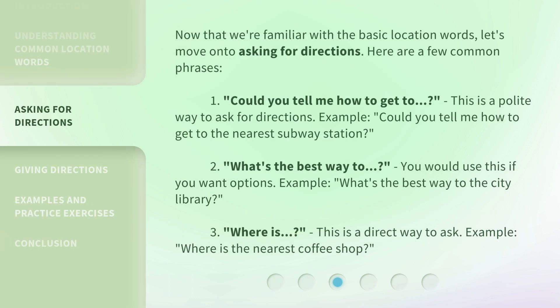Now that we're familiar with the basic location words, let's move on to asking for directions. Here are a few common phrases. 1. "Could you tell me how to get to...?" — This is a polite way to ask for directions. Example: "Could you tell me how to get to the nearest subway station?" 2. "What's the best way to...?" — You would use this if you want options. Example: "What's the best way to the city library?" 3. "Where is...?" — This is a direct way to ask. Example: "Where is the nearest coffee shop?"